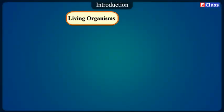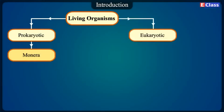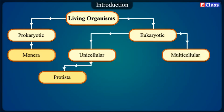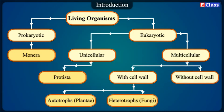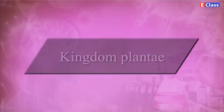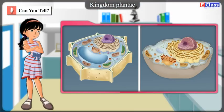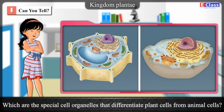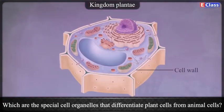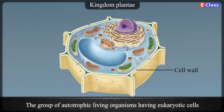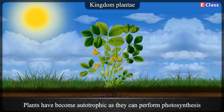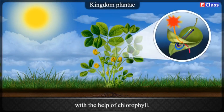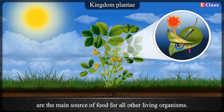Living organisms are classified as: Prokaryotic (Monera) and Eukaryotic. Eukaryotes include unicellular Protista, and multicellular forms with cell walls — autotrophs (Plantae) and heterotrophs (Fungi) — and those without cell walls (Animalia). The group of autotrophic living organisms having eukaryotic cells with cell walls is the group of plants. Plants perform photosynthesis with the help of chlorophyll and are the main source of food for all other living organisms.